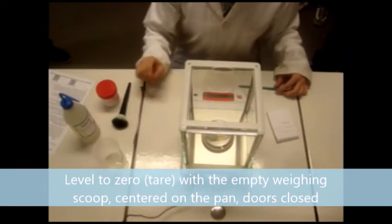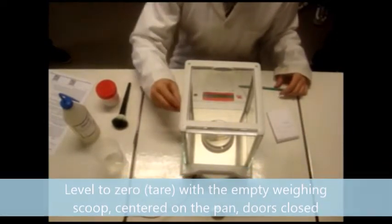Level to zero, start with the empty weighting scoop, place it on the pan, door closed.